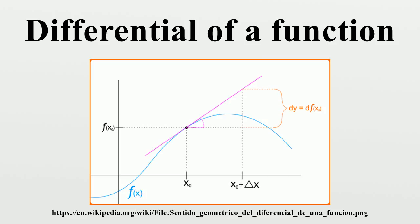This is precisely the Fréchet derivative, and the same construction can be made to work for a function between any Banach spaces. Another fruitful point of view is to define the differential directly as a kind of directional derivative, which is the approach already taken for defining higher-order differentials. If t represents time and x position, then h represents a velocity instead of a displacement. This yields yet another refinement of the notion of differential: that it should be a linear function of a kinematic velocity. The set of all velocities through a given point of space is known as the tangent space, and so df gives a linear function on the tangent space — a differential form.